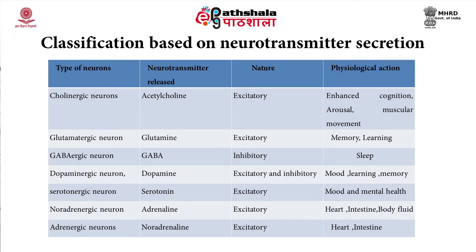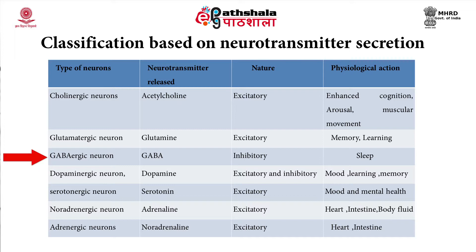Another classification is based on the neurotransmitters that neurons release, as their functions also differ accordingly. For example, cholinergic neurons release acetylcholine and are mostly excitatory, participating in cognitive functions. GABAergic neurons release GABA (gamma-aminobutyric acid) and are mostly inhibitory — their action helps to induce sleep. Similarly, there are other types of neurotransmitters.